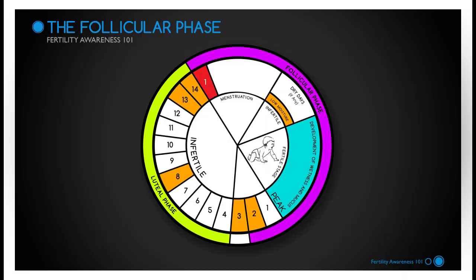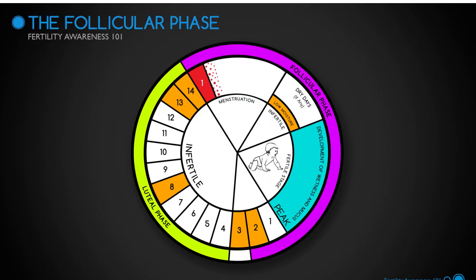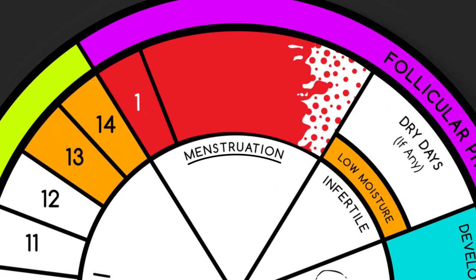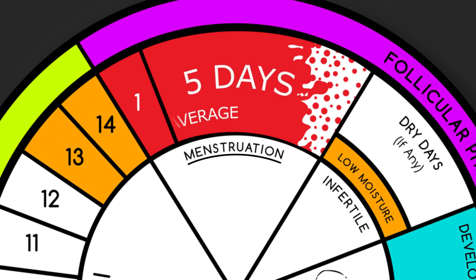During the first days of the follicular phase, menses, or bleeding, occurs. The average length of bleeding is five days, but anything between three and seven days is considered normal.